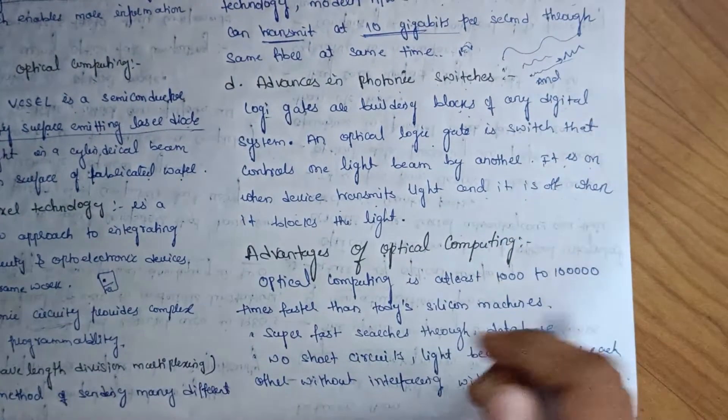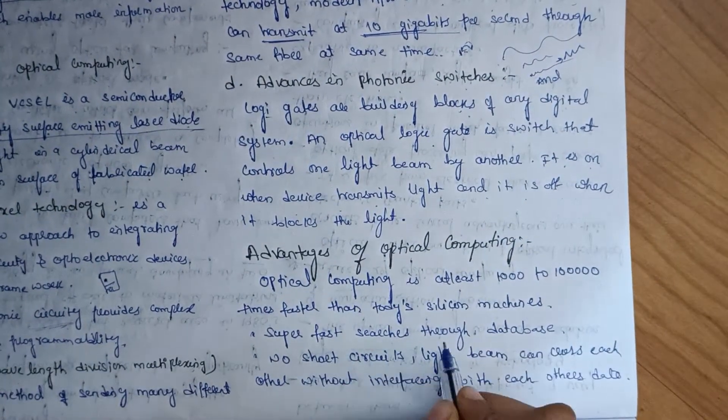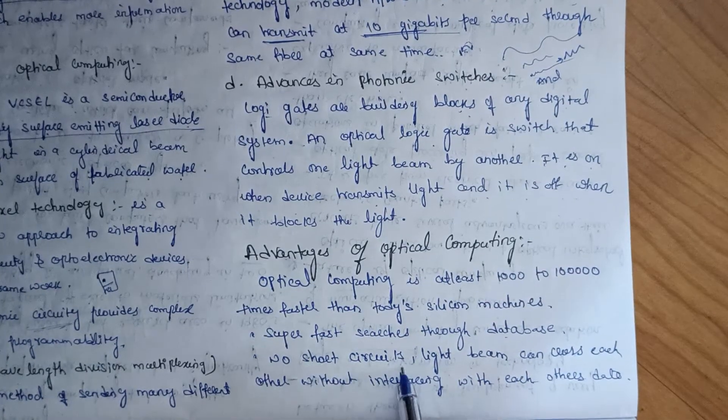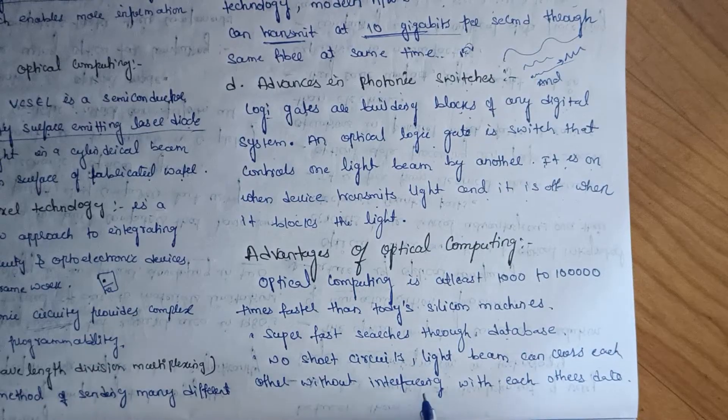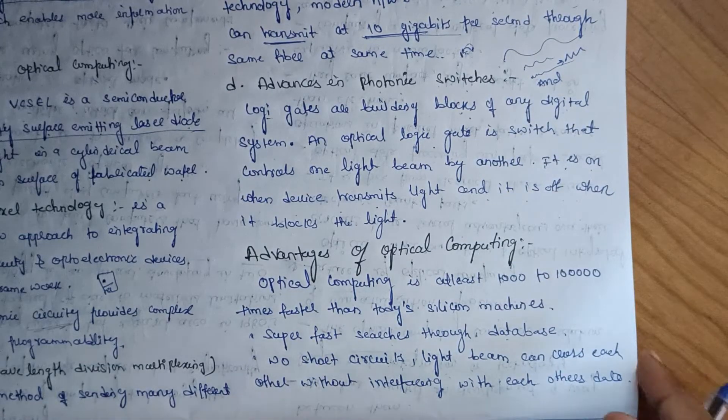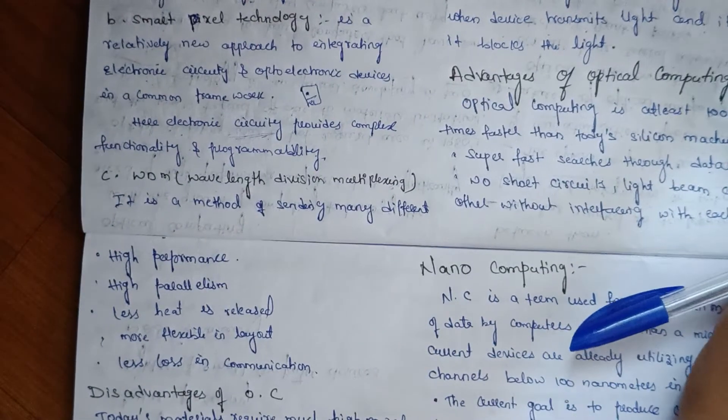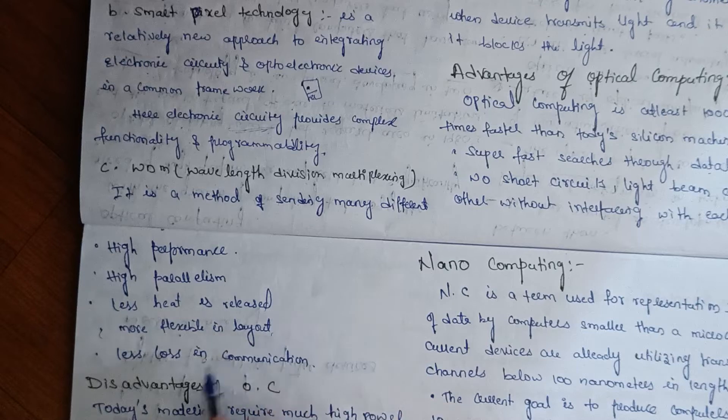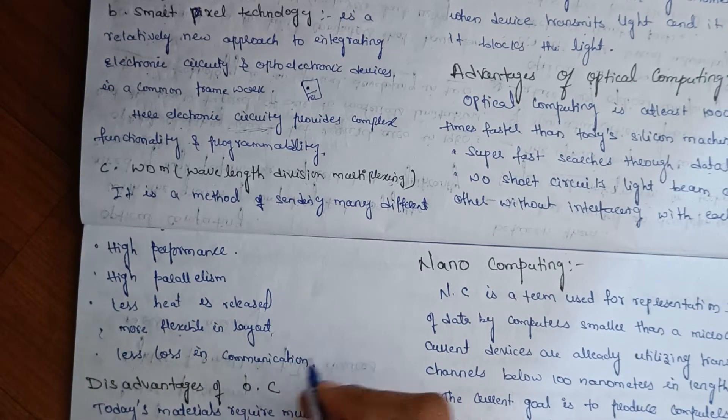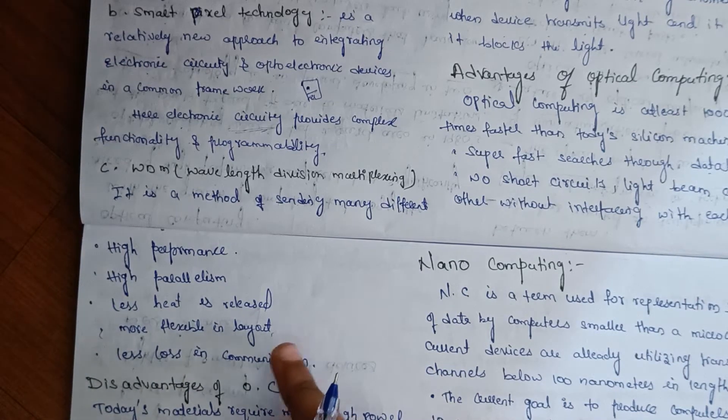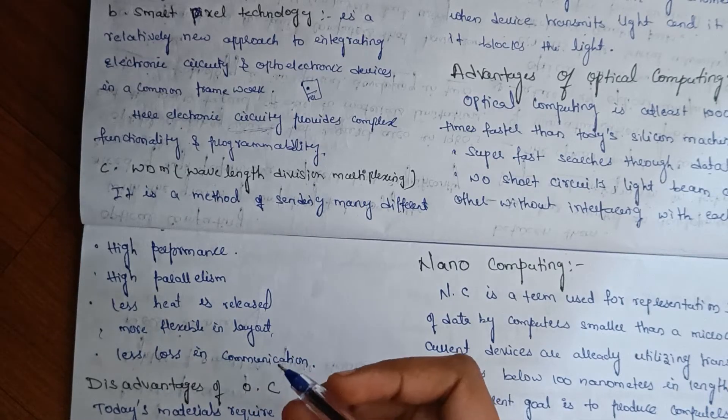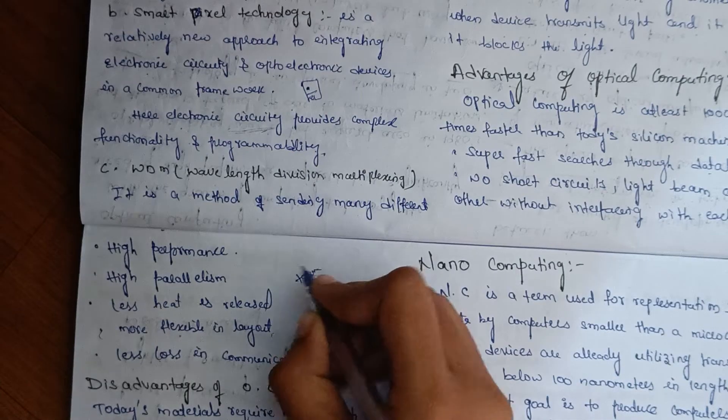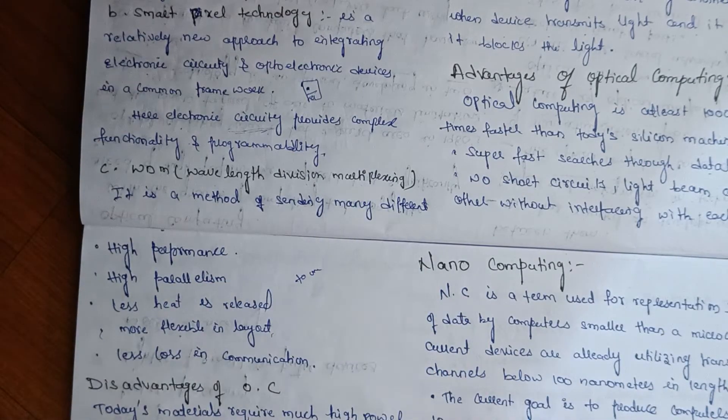Advantages: Super fast searches through databases, no short circuits, light beams can cross each other without interfacing with each other's data. It provides high performance, high parallelism, less heat is released, more flexible layout, less loss in communication. Every time one or more tasks are completed. Performance is very fast.